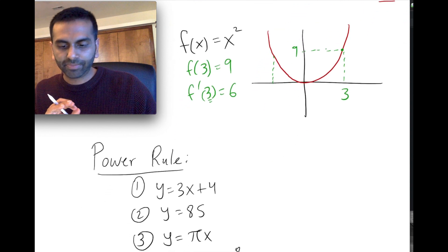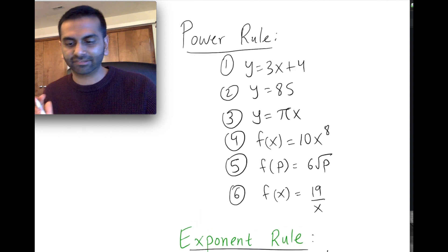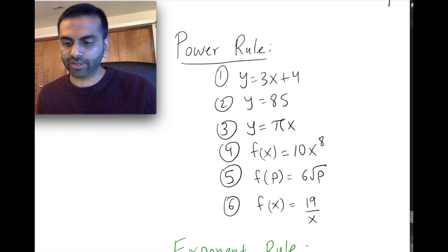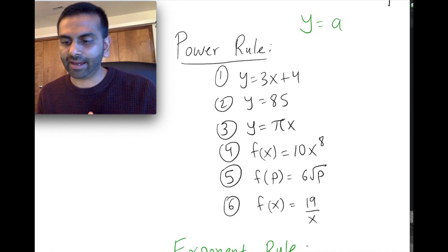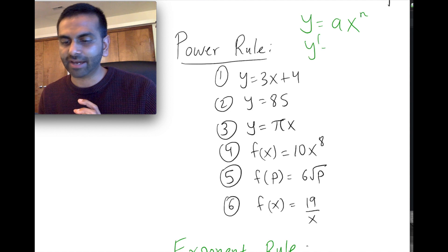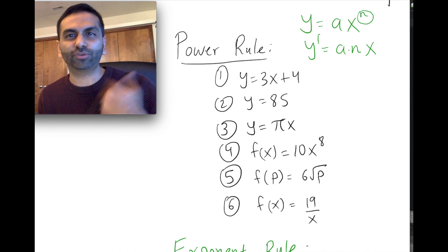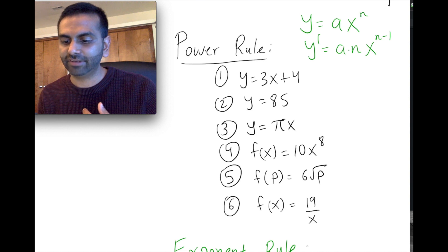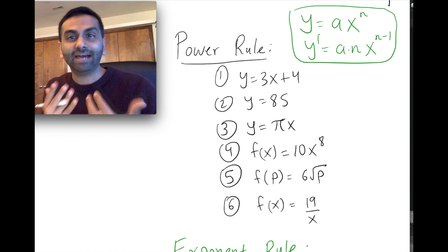Let's look at the main algebraic rule for finding the derivative, which is called the power rule. The power rule basically says this: if your function y equals some power function in the form ax to the power n, where a is a constant and n is a constant, then the derivative is — you take this exponent down and multiply it out front. So this is going to be a times n, and then you keep x but subtract one from that exponent. That's how you use the power rule to find the derivative of a power function.